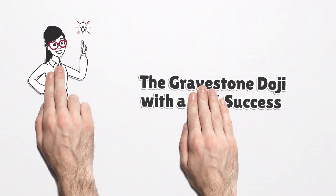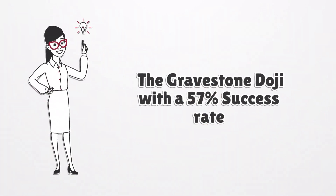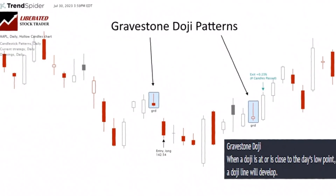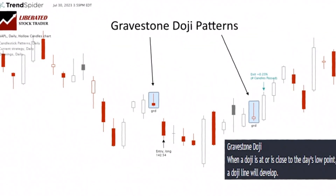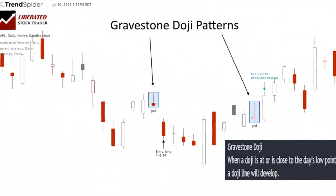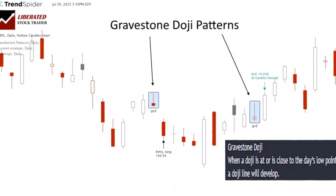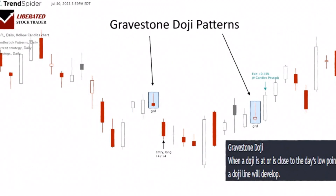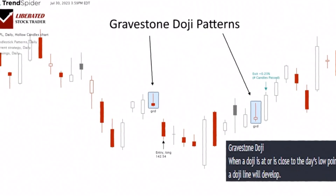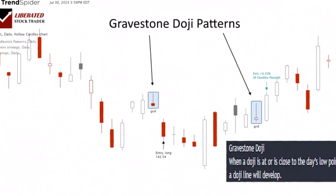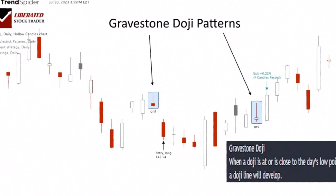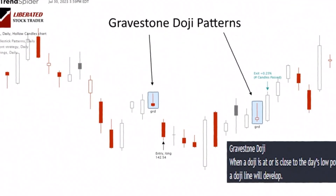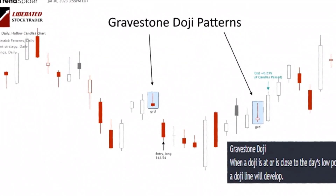Other reliable patterns include the gravestone doji with a 57% success rate. The pattern takes shape when a trading session's opening, closing, and low prices are almost identical. This candle looks like a gravestone with a tall wick on top, indicating that buyers failed to push prices up and sellers brought them back down to around the opening price at the end of the trading session.